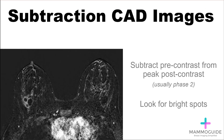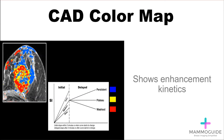Using the computer-aided detection software, subtraction images can be created where you subtract the pre-contrast sequence from the peak post-contrast sequence, which is usually phase 2, making evaluation for bright spots much easier. Computer-aided detection color mapping can be useful to evaluate the enhancement kinetics. The software also allows for creation of enhancement curves to tell whether a lesion has persistent, plateau, or washout kinetics.